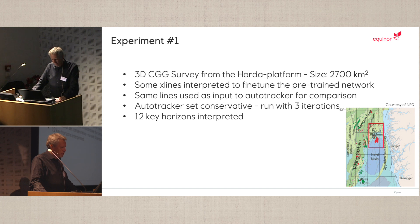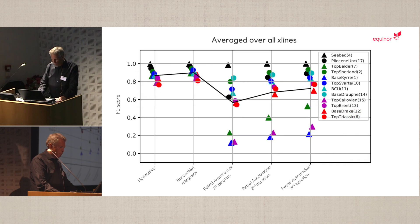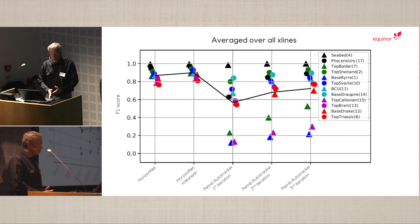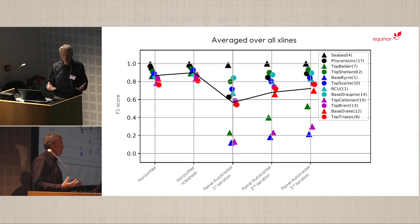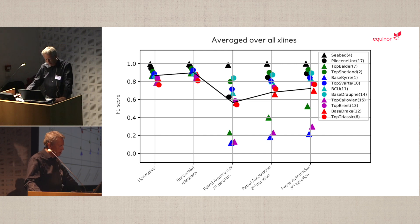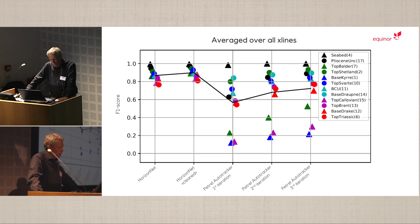The first experiment was on the Horda Platform CG survey. We used a set of lines and there were 12 key horizons. We wanted to compare this with the Petrel auto-tracker. The F1 score results, averaged over all cross-lines, show that the cleaned HorizonNet predictions fall between 80% and 100%, which is very good.